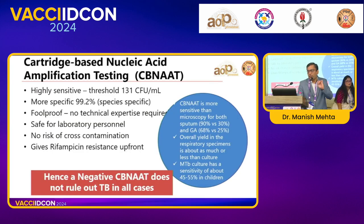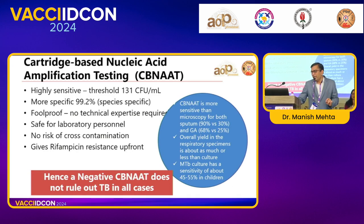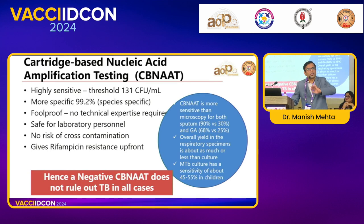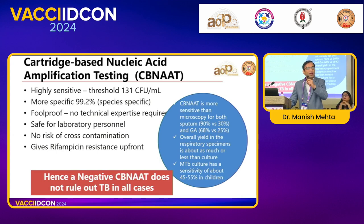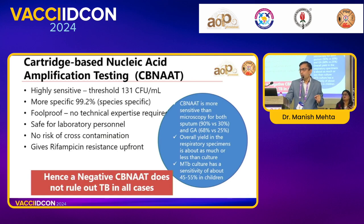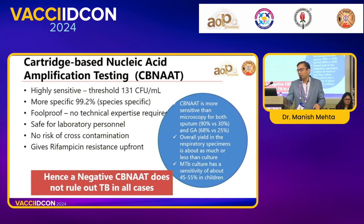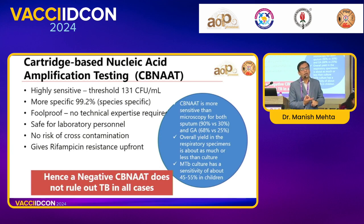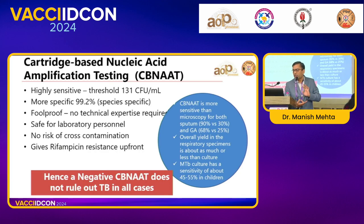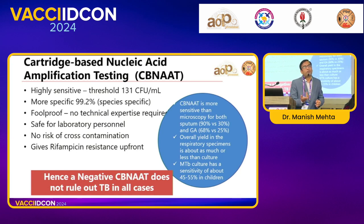CBNAAT characteristics: high sensitivity (131 bacilli per ml), more specific, no cross-contamination as it is a closed technique — the sample is not opened anywhere and is directly put in the machine, so chances of lab personnel infection are very low. It also gives rifampicin resistance upfront. A negative CBNAAT does not rule out TB — CBNAAT has 90% sensitivity and smear only 30-40% compared to culture positivity. Overall yield in respiratory specimens is not great, and mycobacterial culture has sensitivity of only 45-55%. This is the core issue with TB diagnosis.